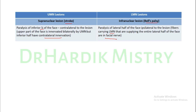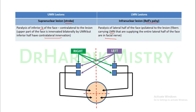Let me clarify this with a diagram. The right and left sides of the cortex connect to the cranial nuclei. The upper nuclei supply the upper half of the face and the lower nuclei supply the lower half. From the right cortex, fibers join the left facial nerve nuclei, supplying both upper and lower halves of the facial muscles, and also send branches to the upper half of the same side.